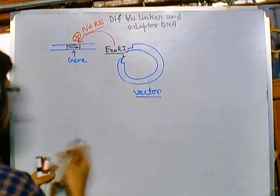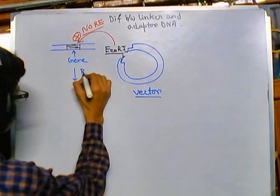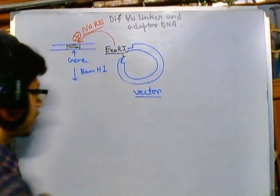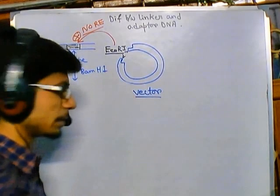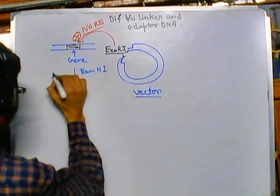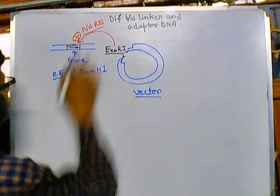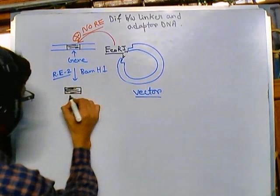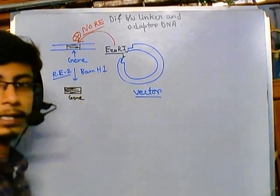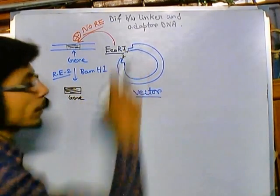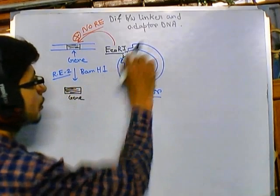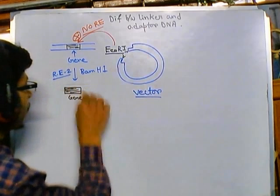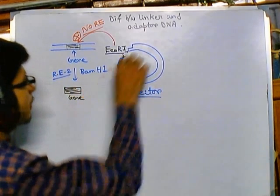So how can we cut this gene to produce a compatible end so we can attach it to the vector? To solve this, we treat it with another restriction enzyme, say BamH1, which generates a blunt end. So we get our gene of interest, but this is a blunt end while the vector has a cohesive end — you cannot join them easily using ligation. We need to make the terminal of the gene compatible with the vector.